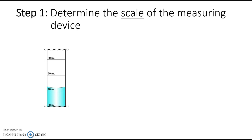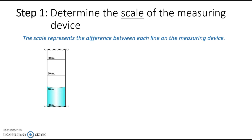The first thing you have to do when reporting a measurement with the correct number of significant figures is determine what the scale of the measuring device is. The scale represents the difference between two lines on the instrument. For a graduated cylinder, that's how the volume changes as you go from one line to the next. Graduated cylinders can have different scales — some change by one milliliter, others by 0.1 milliliters or 10 milliliters per line.